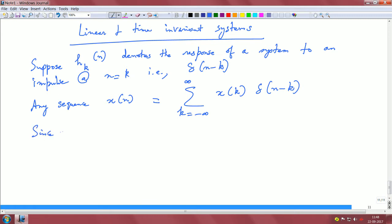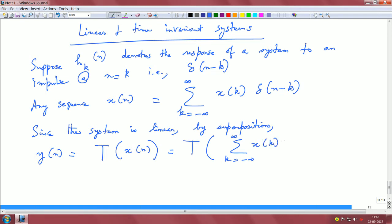Now, since this system is linear by superposition, y(n) is basically the response to this x(n). Y(n) is the response of the system to the input x(n), and this is the response to x(n) which is x expanded out using the delayed delta sequence.